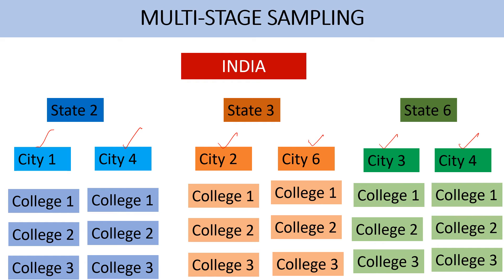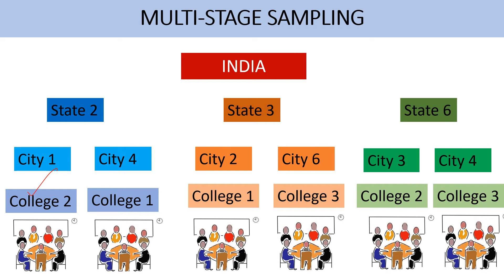Let's say City 1 is divided into different colleges — College 1, College 2, College 3, and so on. Again City 4 is divided into colleges. City 2 from State 3 is divided similarly. This way all the cities are divided into different colleges, which are sub-clusters. With the same pattern, by using simple random sampling or systematic random sampling, I will select few colleges as my sample. Let's say from State 2, City 1, I have selected College 2; City 4, I have selected College 1; State 3, City 2, I have selected College 1. Now if it is feasible for me to collect data from all the teacher educators of these colleges, I will stop here.